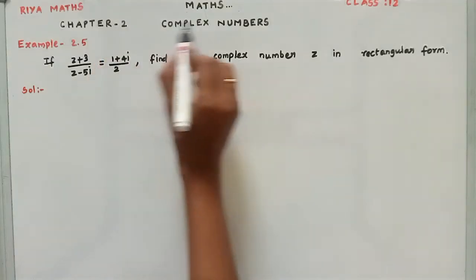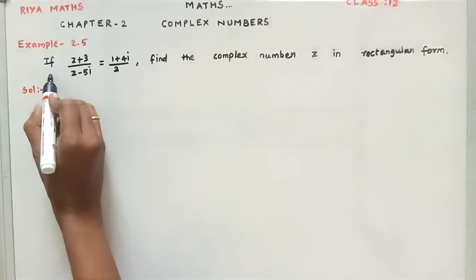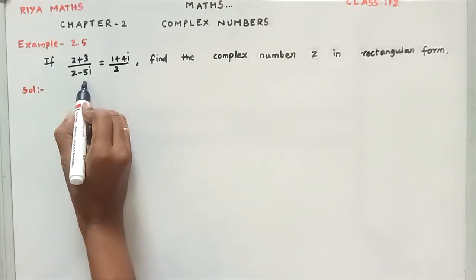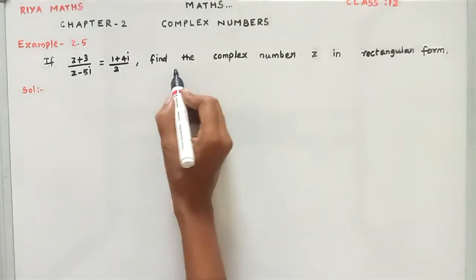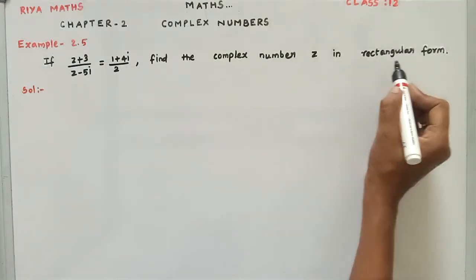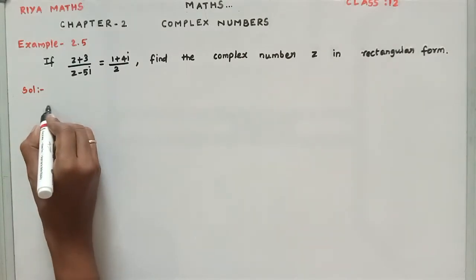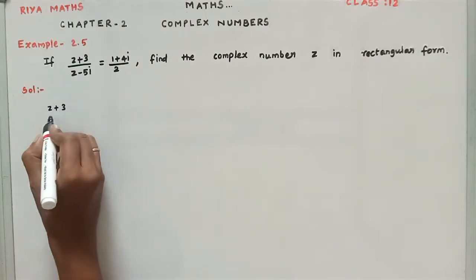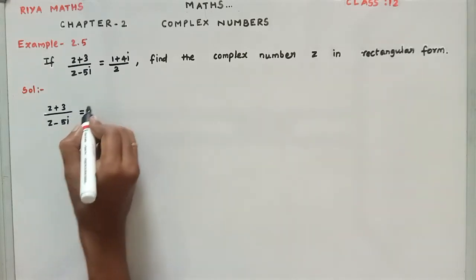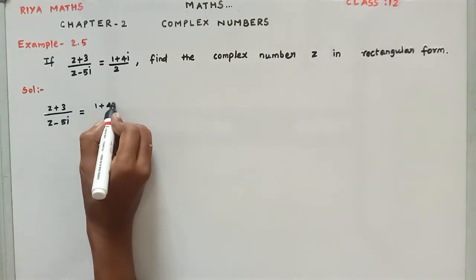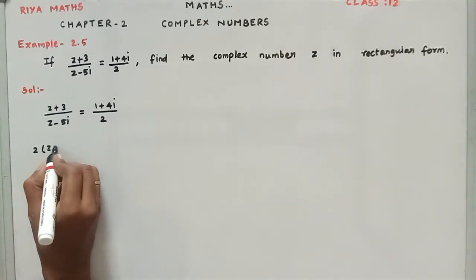Chapter 2, Complex Numbers, Example 2.5. If (z + 3) / (z - 5i) = (1 + 4i) / 2, find the complex number z in rectangular form. We can see the solution: given (z + 3) / (z - 5i) = (1 + 4i) / 2. We can cross multiply.